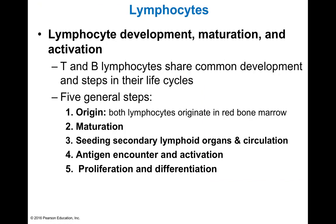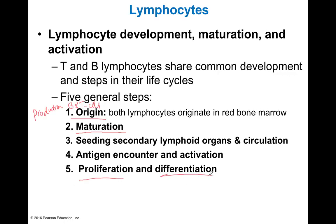So how do B cells and T cells become what they are? The process that allows them to play their role in adaptive immunity is a five-step process: production (origin), maturation, seeding of secondary lymphoid organs, antigen encounter and activation, and finally proliferation followed by differentiation into effector and memory cells.